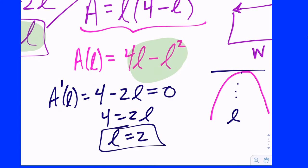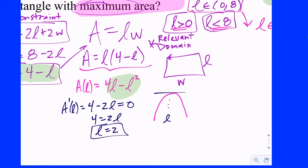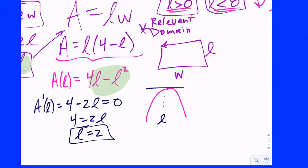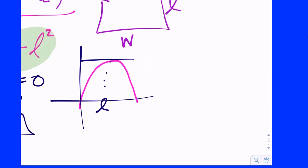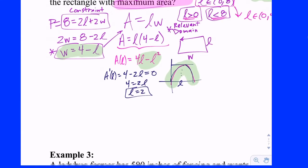Now the least fun part about optimization on a free response is justifying. Since we don't have a closed interval, we can't justify using the EVT. You would have to say something to the effect that the area is maximized when L is two, using either a modified first derivative test — A prime is positive everywhere to the left of two and negative everywhere to the right, making it not just a local max but an absolute max — or a modified second derivative test: the function is concave down everywhere over our relevant domain, so the critical value has to be an absolute max.